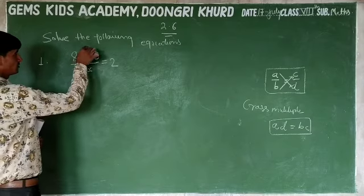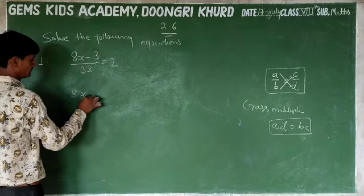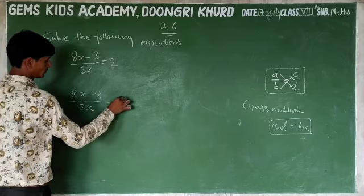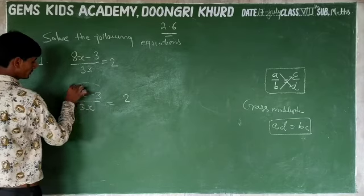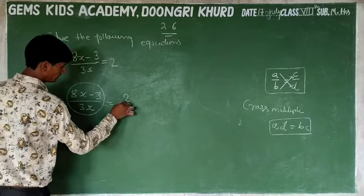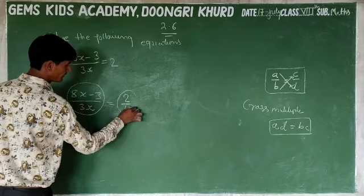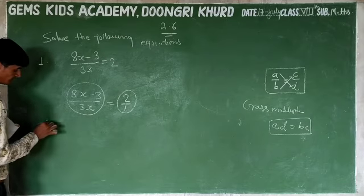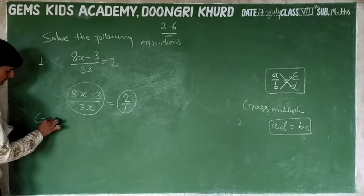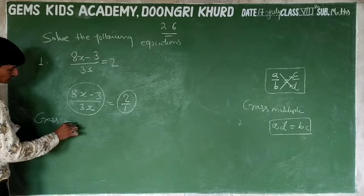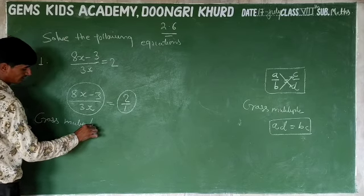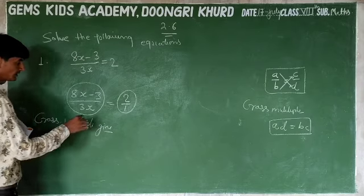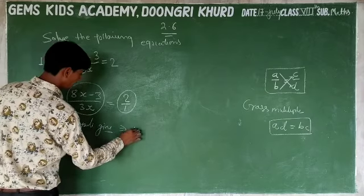This equation is 8x minus 3 upon 3x equal to 2. This is a rational fraction. Now, what do we call cross multiply? Cross multiply gives us the next step. Here we apply cross multiplication.